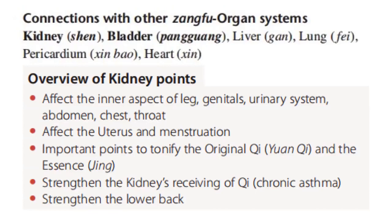In an overview of the kidney points and their functions, the primary channel affects the inner aspect of the leg, the genitals, the urinary system, the abdomen, the chest, and the throat. It also affects the uterus and menstruation. It has important points to tonify the origin of qi or yin qi and essence. It also strengthens the kidneys' receiving of qi, which is indicated for chronic asthma, and it strengthens the lower back.